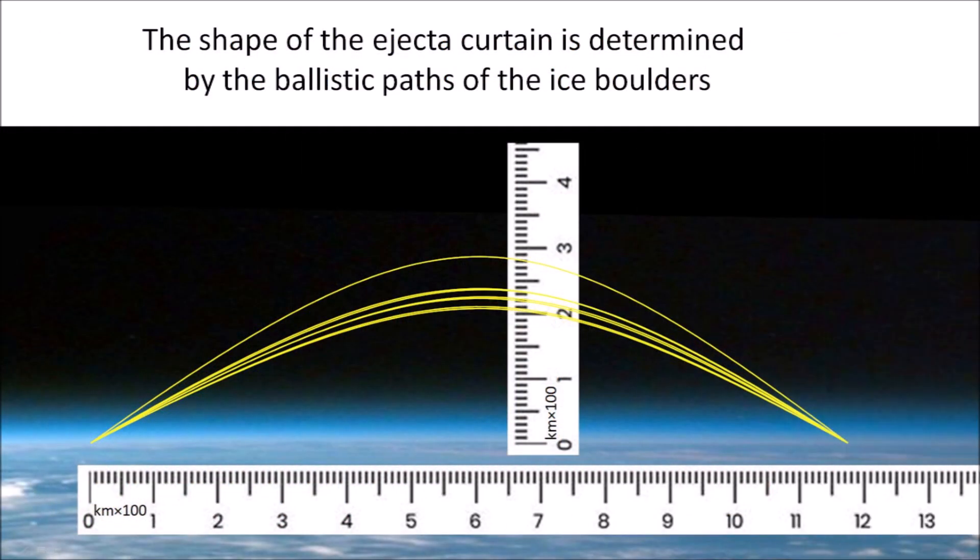We can now plot the trajectories for these seven cases to see their profile, which corresponds to the shape of the ejecta curtain. The starting and ending points are approximately separated by a distance of 1,170 kilometers in all cases. Most of the trajectories have heights between 200 and 240 kilometers above the surface of the Earth, with one trajectory reaching 285 kilometers. The Earth's atmosphere extends only to 100 kilometers above the surface, so all the trajectories are suborbital space flights where a major portion of the flight is in the vacuum of space.